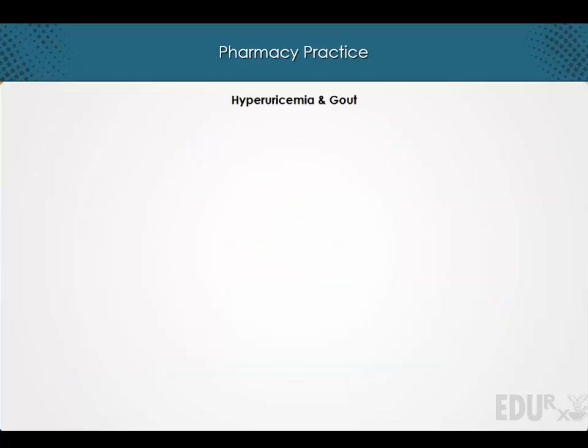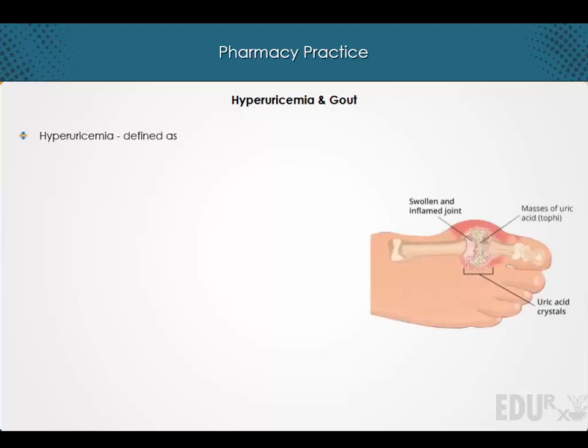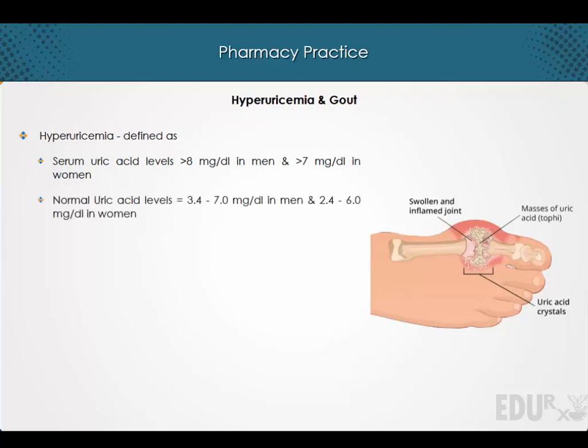Hi and welcome to a lecture on hyperuricemia and gout. Hyperuricemia is defined as serum uric acid levels more than 8 mg per deciliter in men and more than 7 mg per deciliter in women. The normal uric acid levels are between 3.4 to 7 mg per deciliter in men and between 2.4 to 6 mg per deciliter in women.